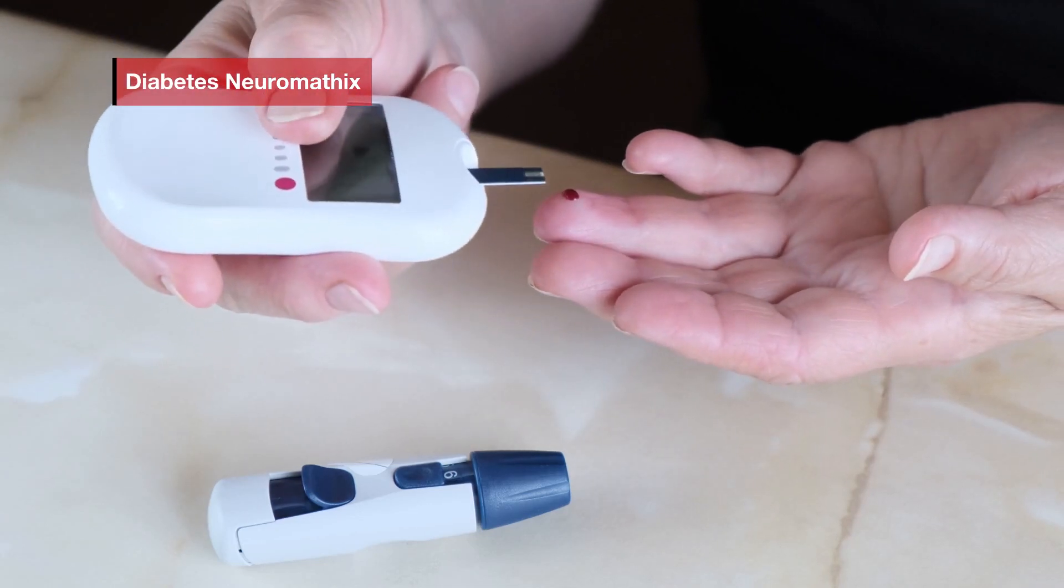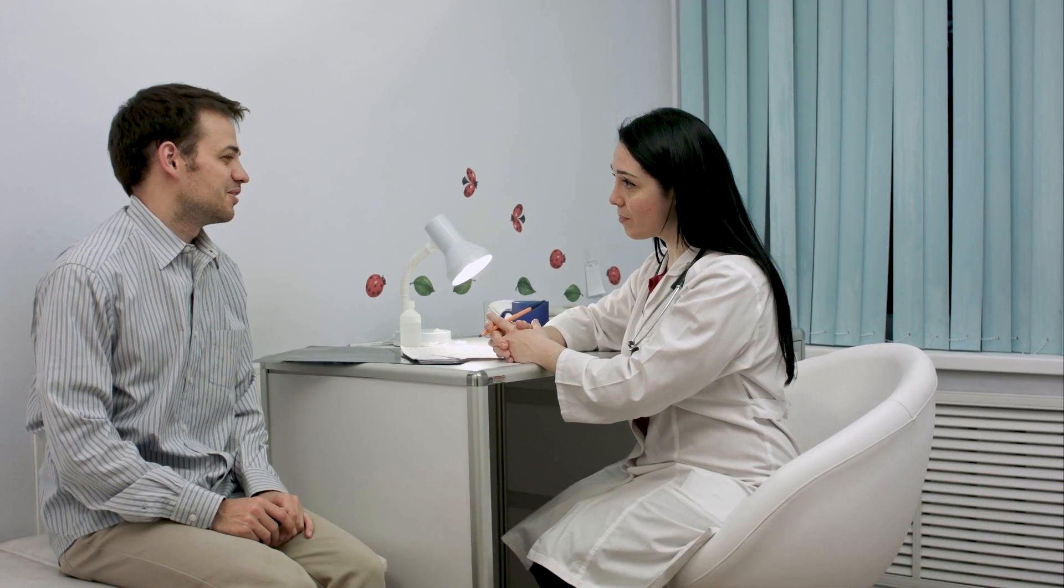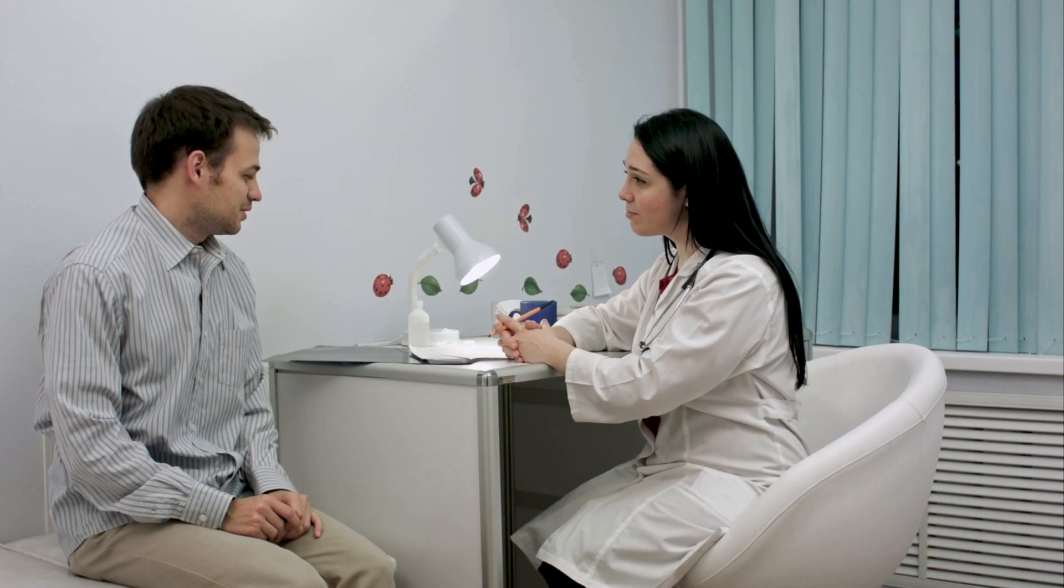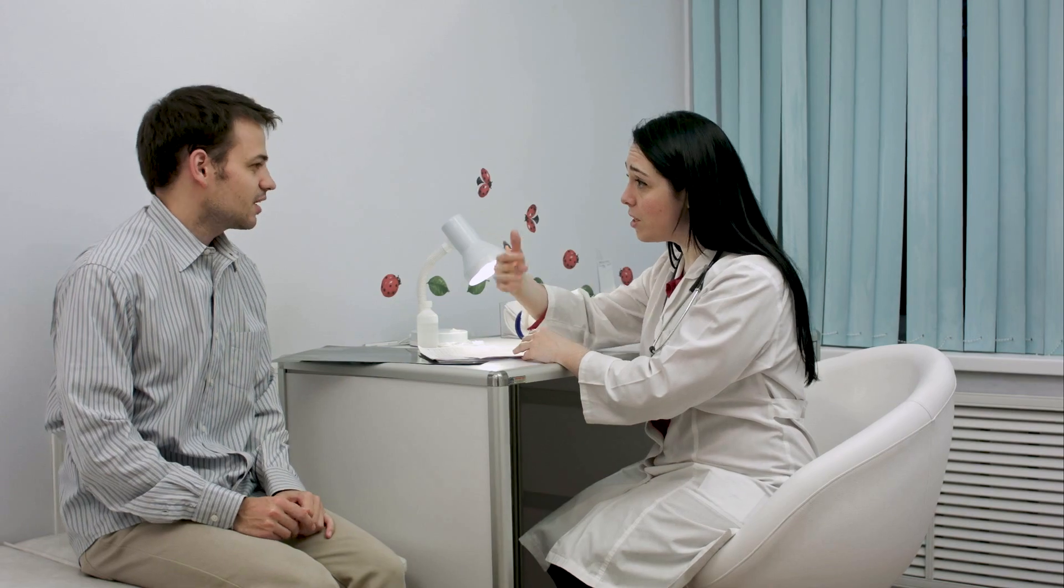Type 1 diabetes forms a spectrum. You simply cannot use existing mathematical techniques for the people who form the most unstable cohort within type 1. They need something special, and we agree with the 'We Are Not Waiting' movement, which basically says we can't afford to wait. We've got to build something that works now.